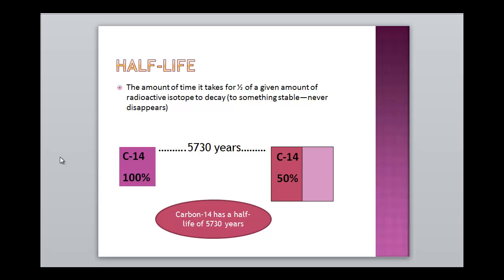Half-Life is the amount of time it takes for one half of a given amount of radioactive isotope to decay to something stable. We're looking at Carbon-14 here. The half-life of Carbon-14 is 5,730 years. Carbon-14 is a good way of determining the age of once-living material, and this can only go back to about 100,000 years, and then the numbers get kind of messy.